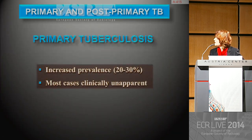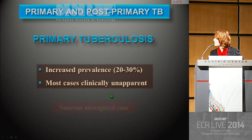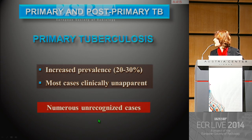Now we move on to the description of primary and post-primary tuberculosis. There is an increased prevalence of primary tuberculosis. Most cases remain clinically unapparent, and that is why there are numerous unrecognized cases.